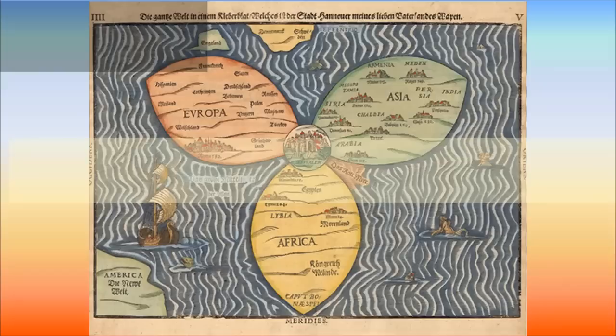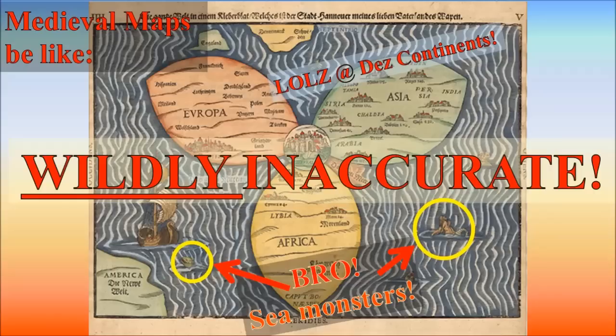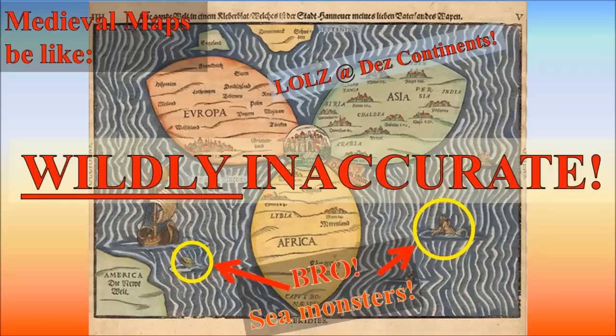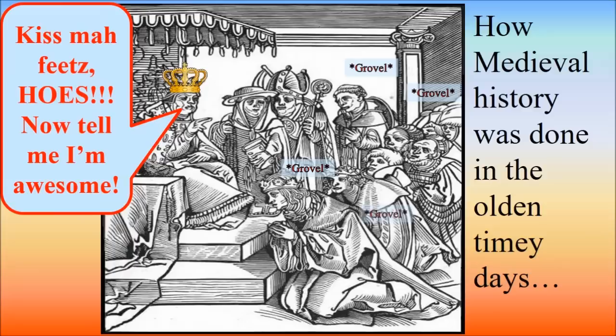Even the companion book that's supposed to explain all this stuff, The World of Ice and Fire, is more like a history book from the medieval times than a modern version of how we record history. Back in those days, they didn't really understand how maps worked or how to accurately report history, and sometimes those medieval historians would straight up lie or fudge the truth to make the kings and popes look good. So because the companion book is written just like those real-life medieval books, we can't be 100% sure that the supposed author is telling the truth — he might not even know the truth.